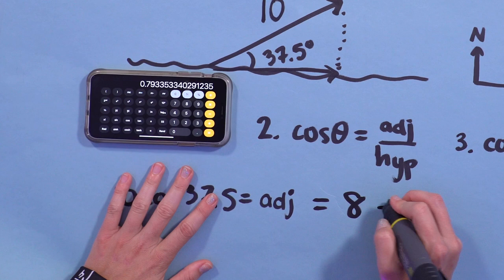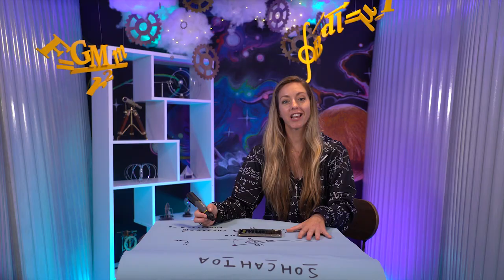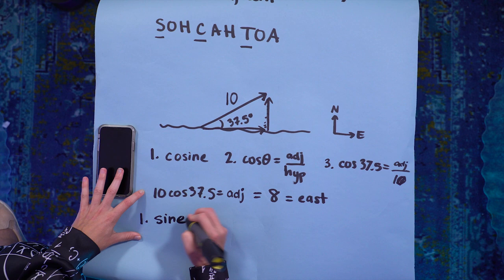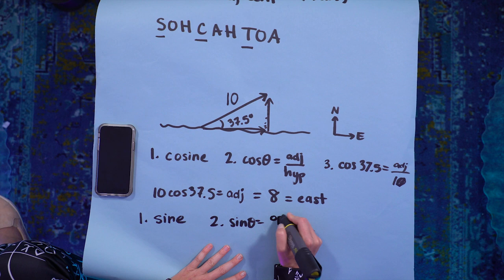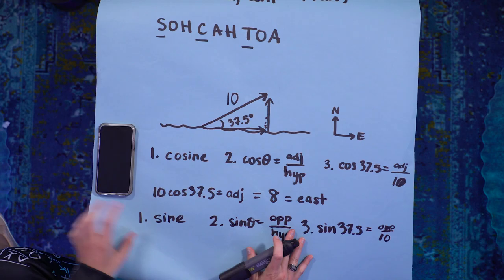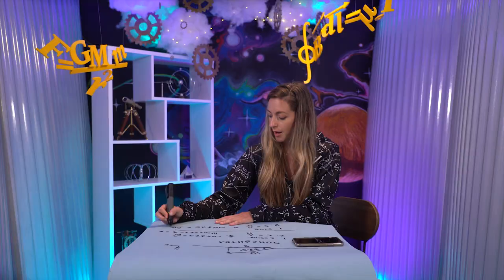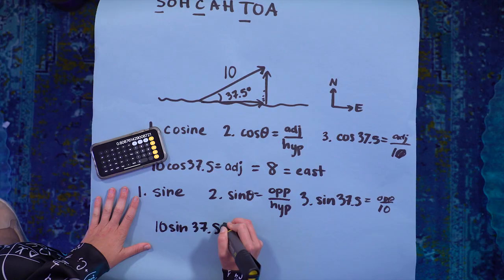Now let's do north. Same steps. Number one, I want now the opposite side. I look, and that's the sine. So I'm going to use sine. Number two, I write down the definition of sine. Sine equals opposite over hypotenuse. And then step three, I plug in what I know. The angle is 37, or 37.5. And the hypotenuse, which is 10, opposite over 10, bring up 10. 10 sine 37.5 equals my side.